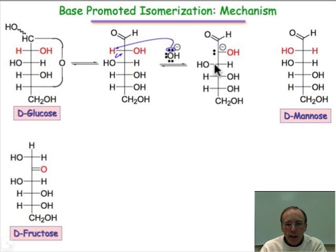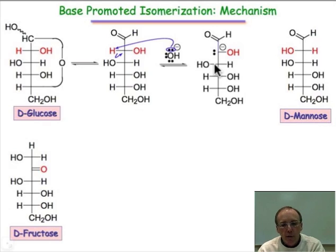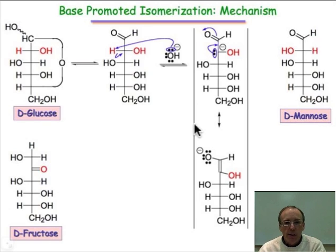Now that we have the carbanion, it's a resonance-stabilized carbanion. That carbanion has an enolate-like form, and so that's always a key form to remember with the deprotonated alpha position.